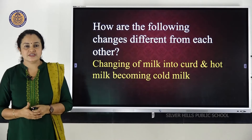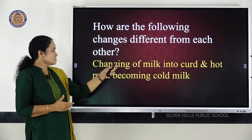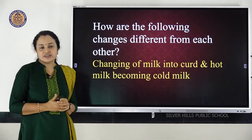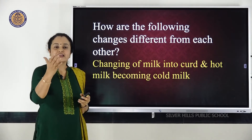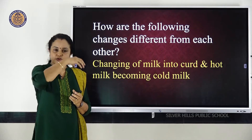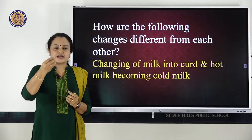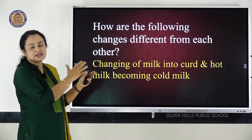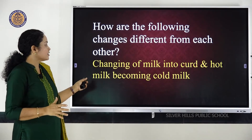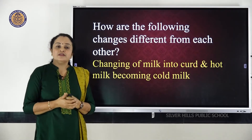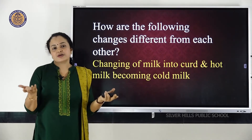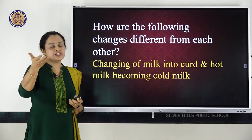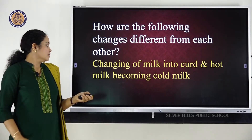How are the following changes different from each other — changing of milk into curd and hot milk becoming cold milk? Changing of milk into curd: milk changes into curd, which is an entirely new substance. When curd is added to milk, the whole milk changes into curd — it is a chemical change or an irreversible change. But hot milk becoming cold milk — milk remains as milk only, no new substance is formed. So that is a reversible change.